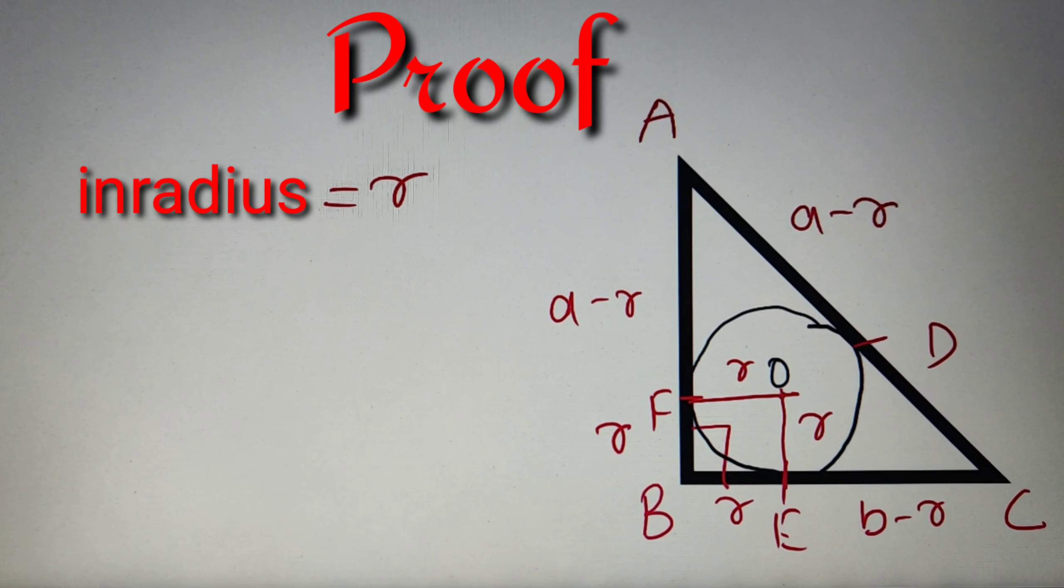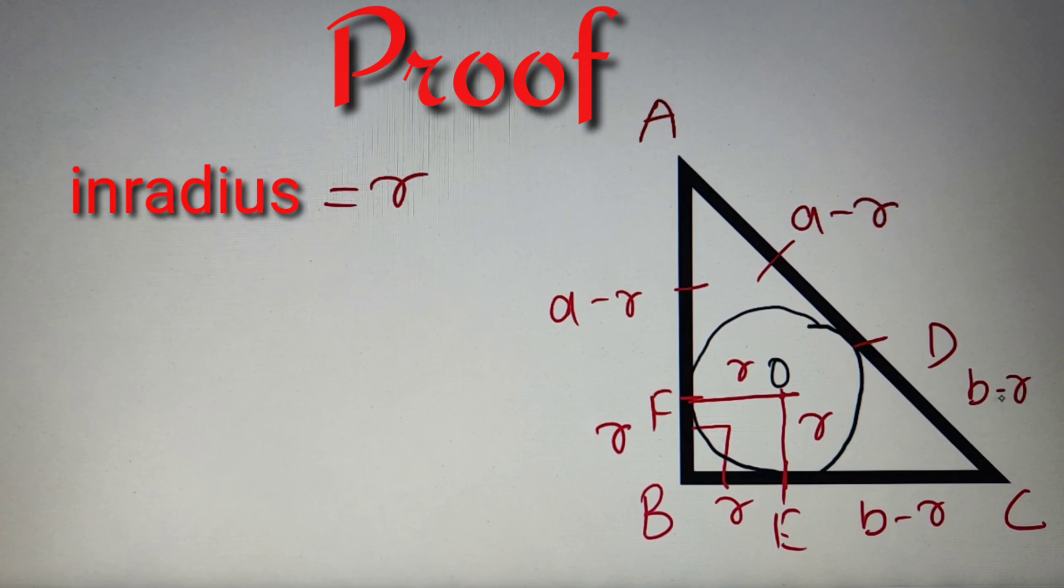Now I can say this because AF and AD are two tangents of a circle drawn from a same point. So according to the tangent properties of a circle AF and AD must be equal to each other and same is the case for EC and CD since they are drawn from a same point they both will be also equal. So CD will also be equal to b minus r.